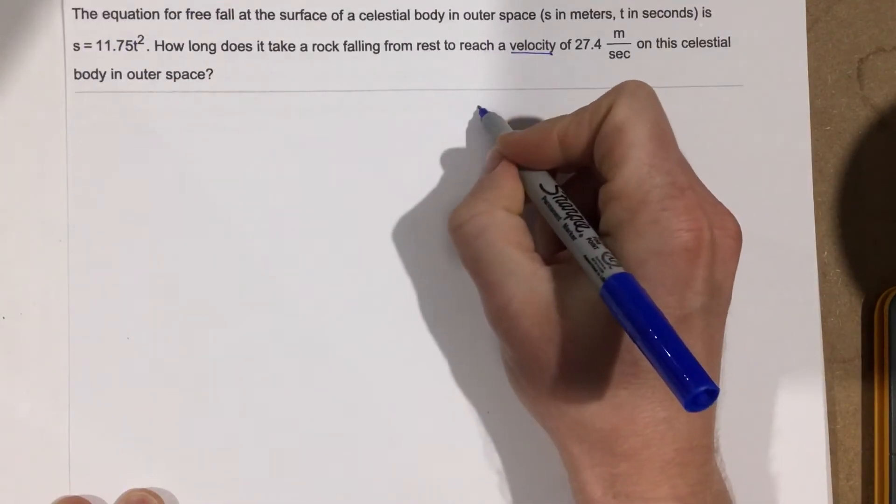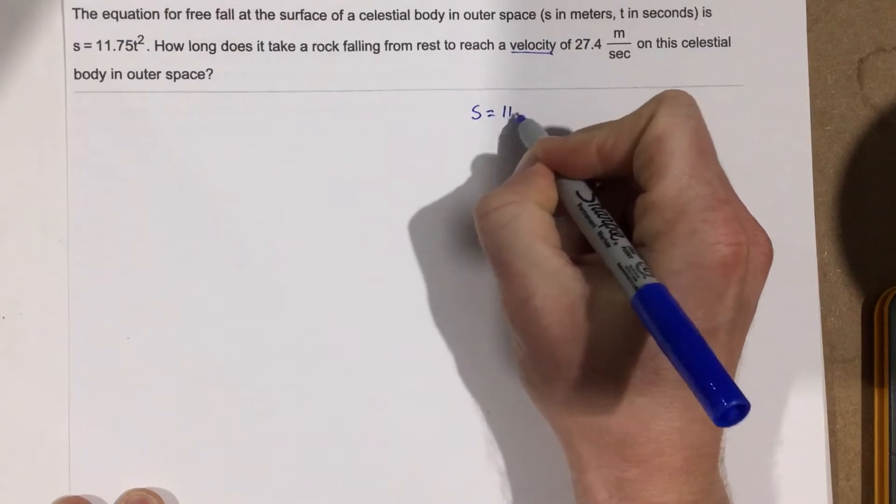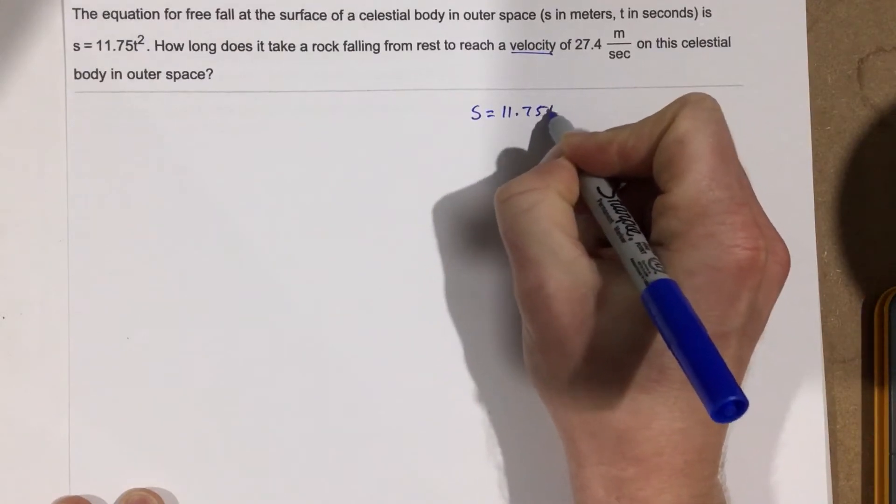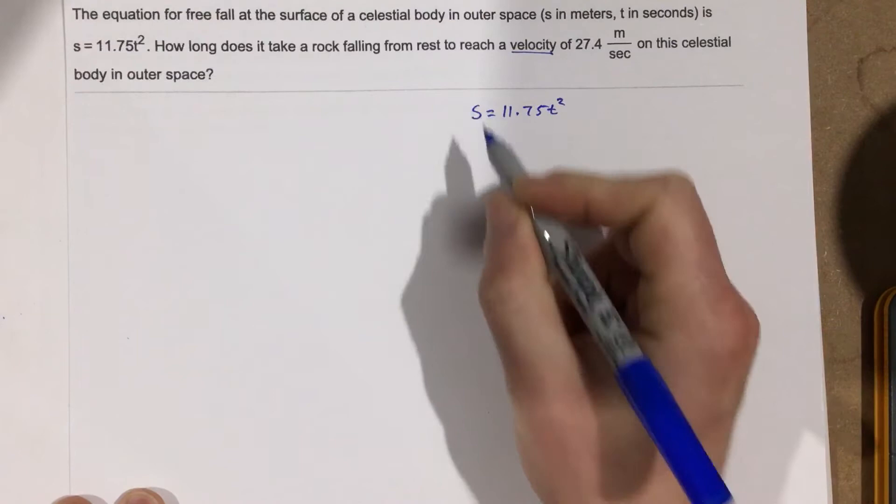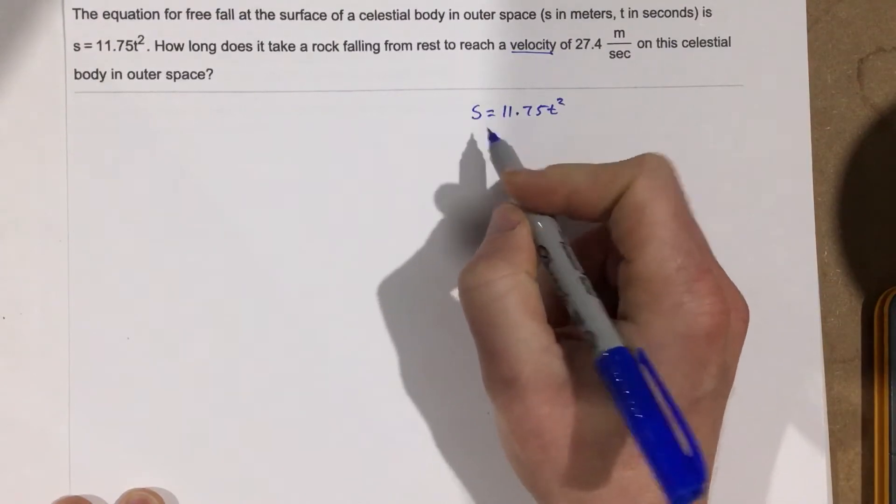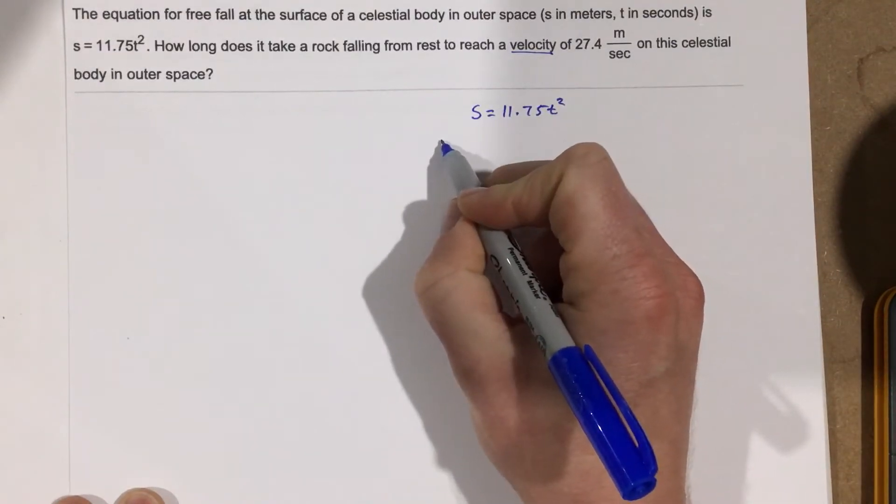I know I can take s equals 11.75 t squared, which is our body's position or distance here, and we can take the derivative of that to get the velocity.